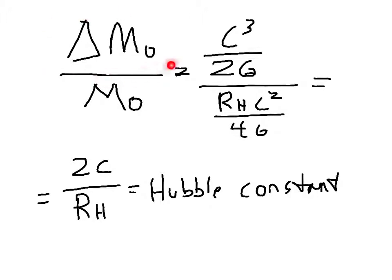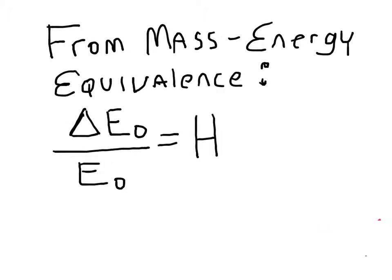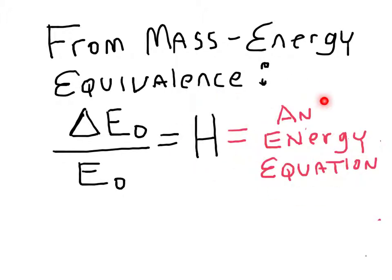Taking delta m sub o divided by the mass of the observable universe gives us again 2c over rh, the Hubble constant. For mass energy equivalence, we find that delta e sub o divided by e sub o is equal to the Hubble constant. The Hubble constant is an energy equation.